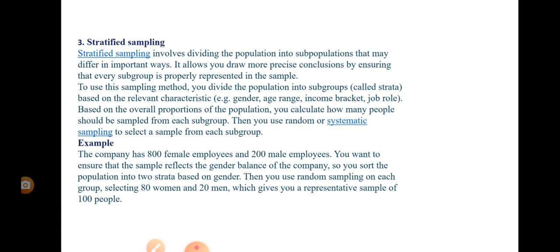For example, a company has 800 female employees and 200 male employees, and you want to ensure that the sample reflects the gender balance of the company. So you sort the population into two strata based on gender — female and male. Then you use random sampling on each group, selecting 80 women and 20 men, which gives you a representative sample of 100 people. This is how you choose a stratified sample.